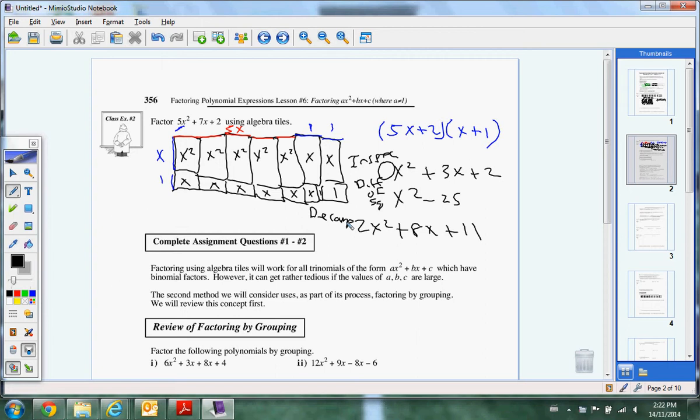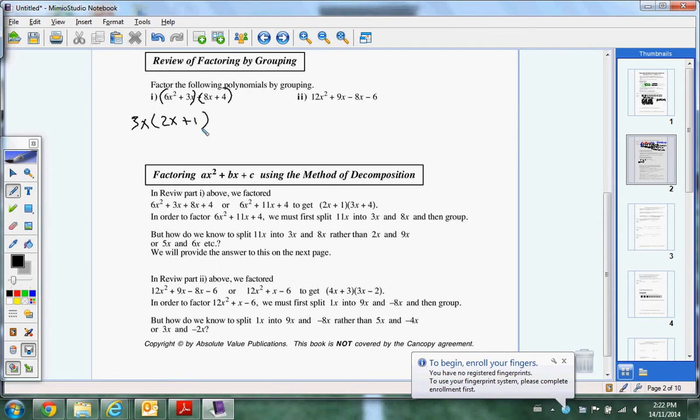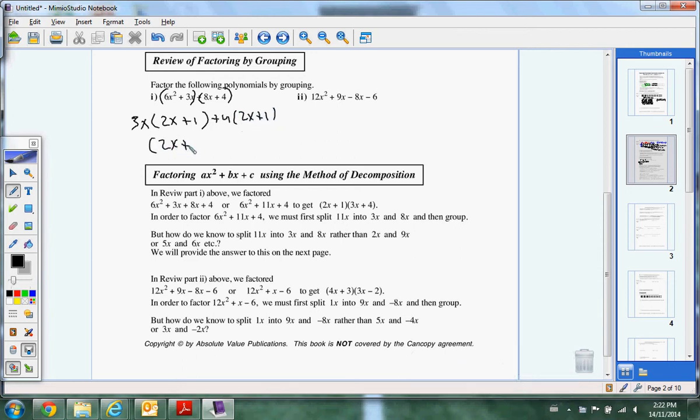Let's review real quick. Review of factoring by grouping. Remember, factoring by grouping, we want to group them into two binomials. And then we want to GCS them. What does 6x squared and 3x have in common? 3 and x. So, that becomes 2x plus 1. What's 8x and 4 have in common? 4. It gives me 2x plus 1. Remember, the 2x plus 1 is the match. So, we write them as 1 and push the 3x plus 4 together. That's our factoring by grouping.